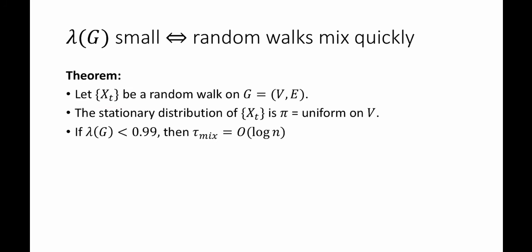Let x sub t be a random walk on the graph G. So here, x sub t is a Markov chain. Then, first, the stationary distribution of this Markov chain, x sub t, is pi, which is the uniform distribution on the vertices V.